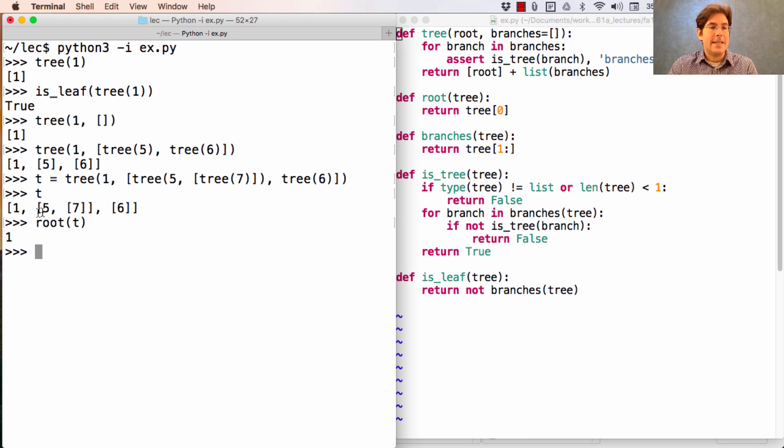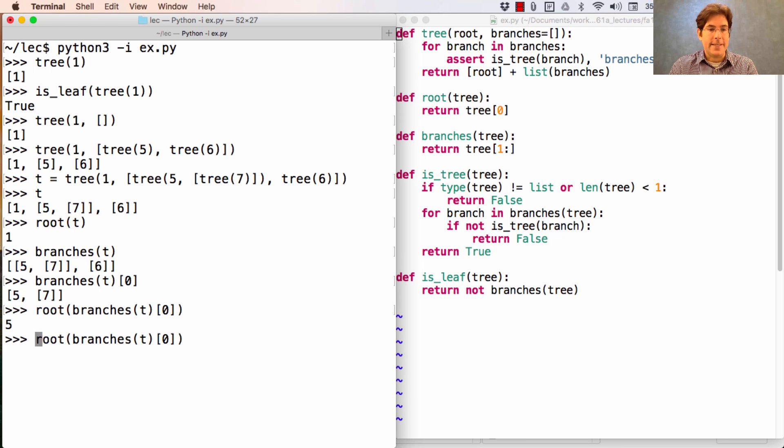So, for instance, if I want to find the value 5, I would do that using my data abstraction by getting the branches of t, getting the branch at element 0, and then getting the root value of that branch. If instead I wanted to ask something about that branch, like is it a leaf, I could just call is_leaf directly on the branch 0 of t. It's not a leaf. But what about branch 1? It is a leaf because branch 1 is just the tree containing 6 and no branches.